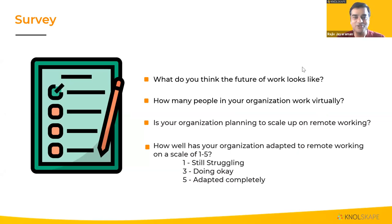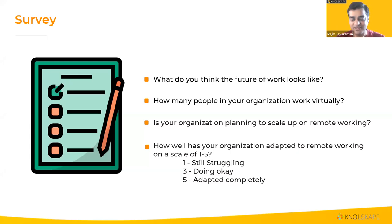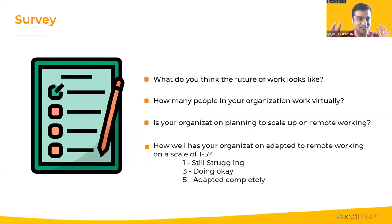The audience has spoken. Question number one, what do you think the future of work looks like? 93% say it's going to be hybrid. Second, how many people in your organization work virtually? 76% to 100% work virtually, so we have predominantly a virtual-working audience. Is your organization planning to scale remote working? 63% of the audience seems to think they are scaling remote working. And how well has your organization adapted? 47% adapted successfully, 22% better than expected — put together about 69% — while about 19% say they haven't figured it out or are inconsistent.